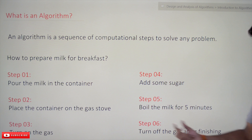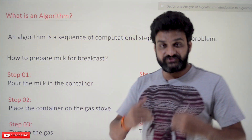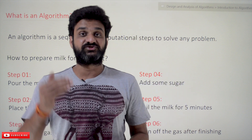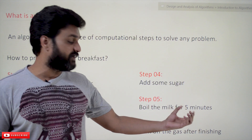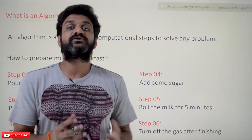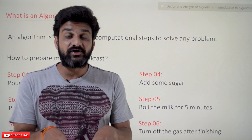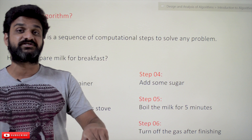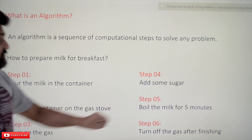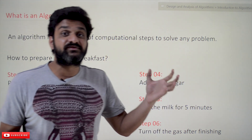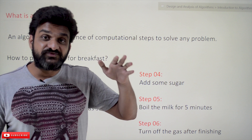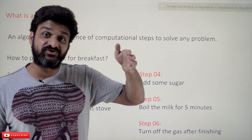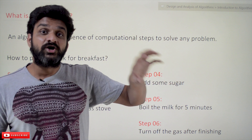The next step is to turn off the gas after finishing — once we have reached our requirement for boiling the milk. Knowingly or unknowingly, consciously or unconsciously, these are the steps involved in preparing milk for breakfast.